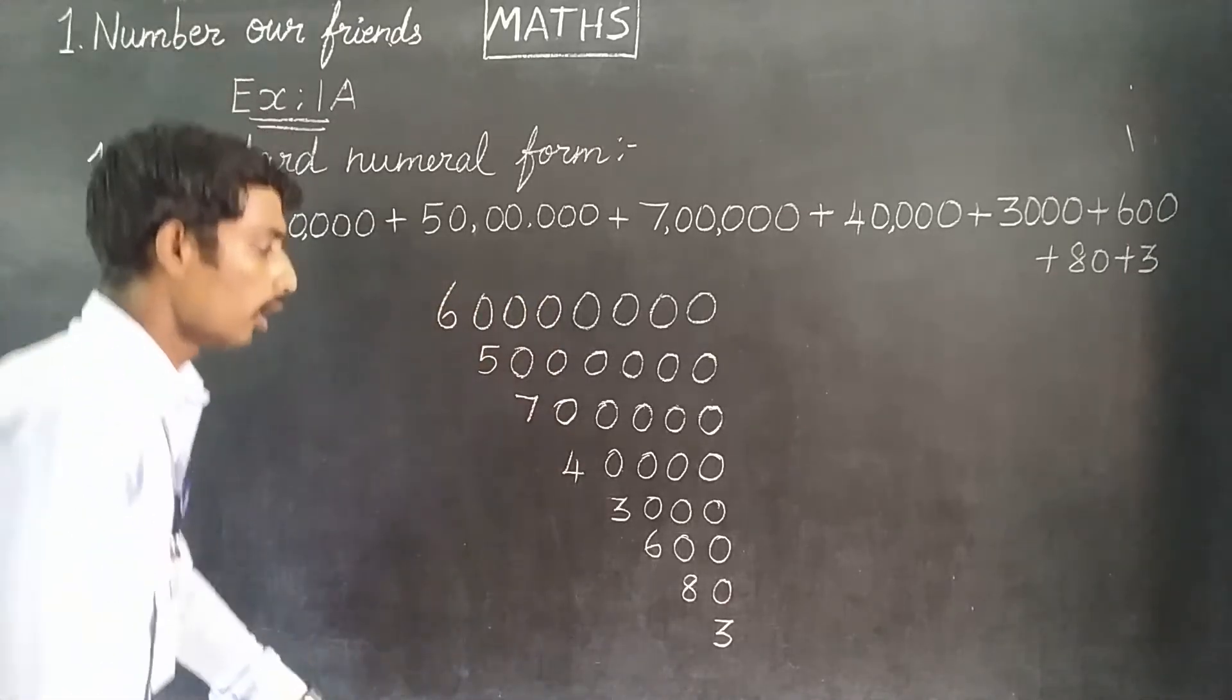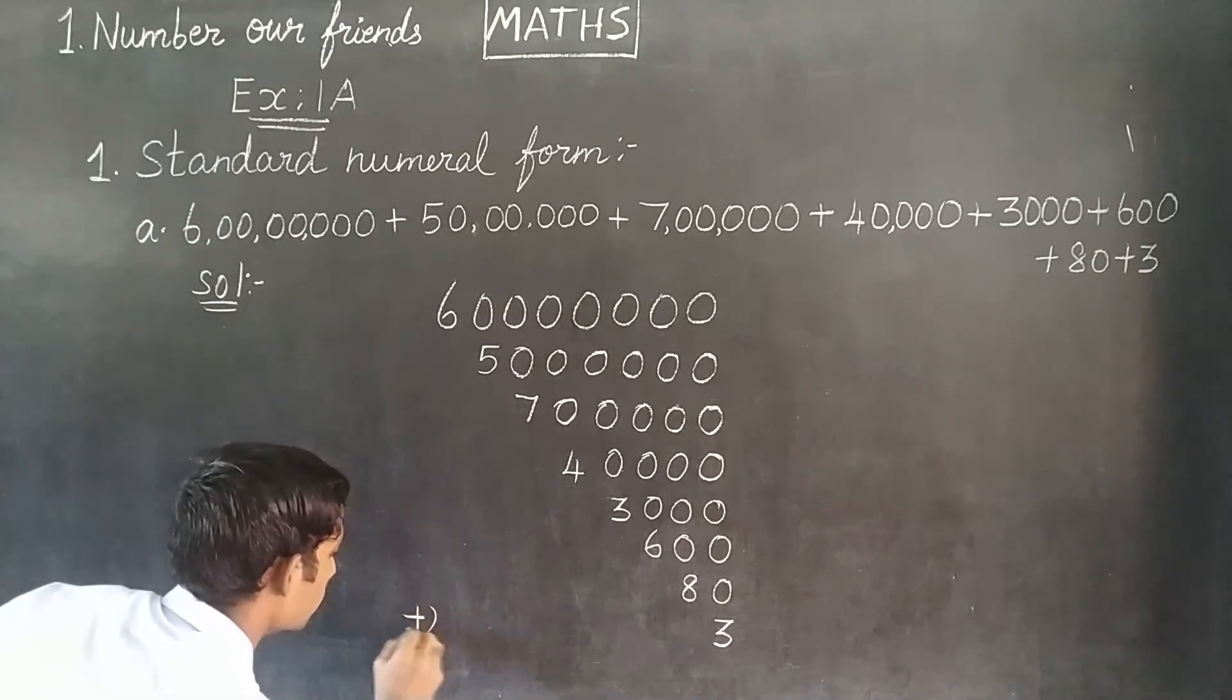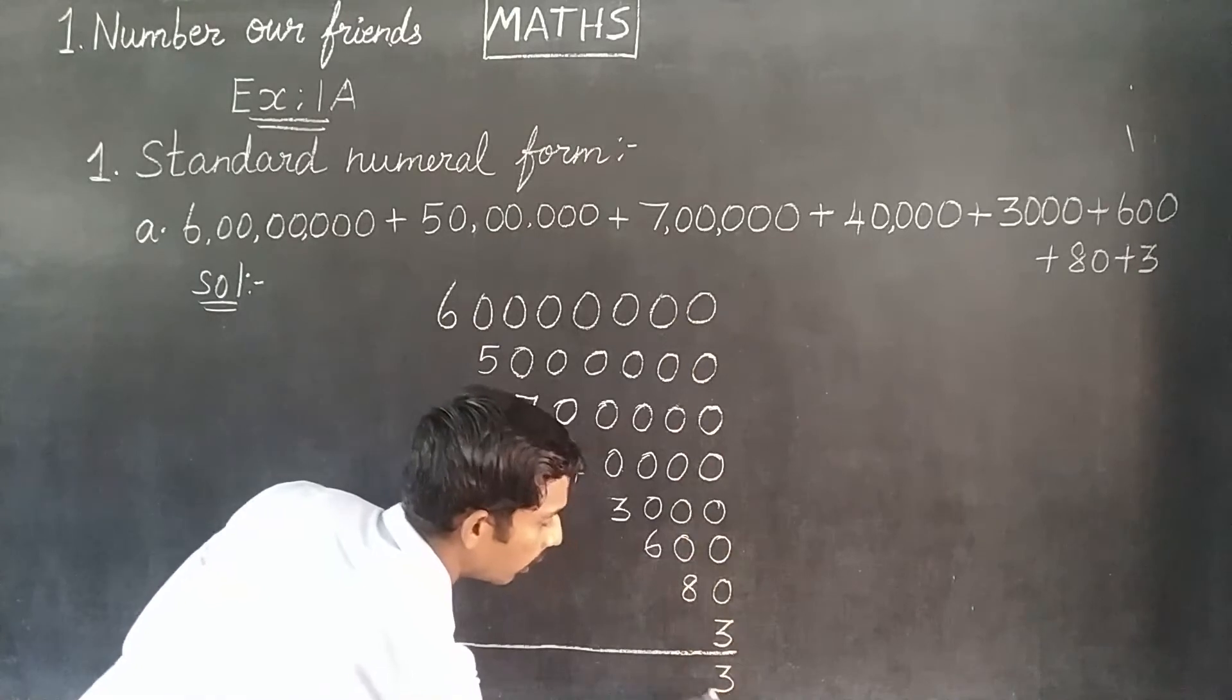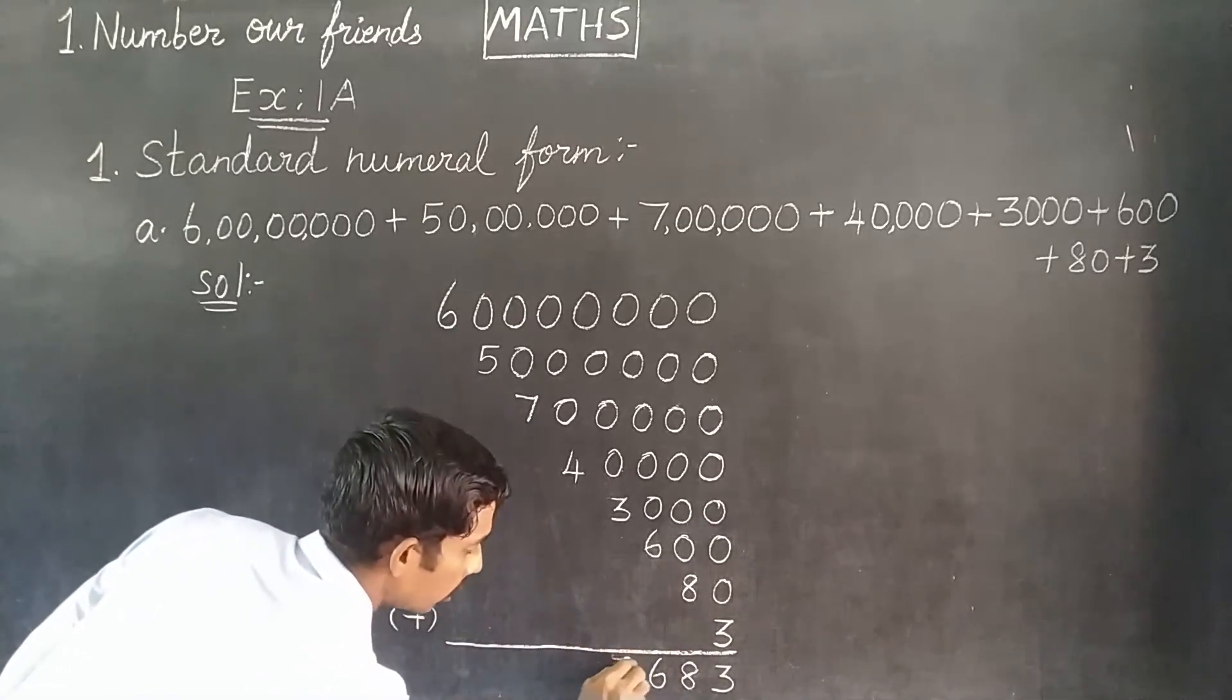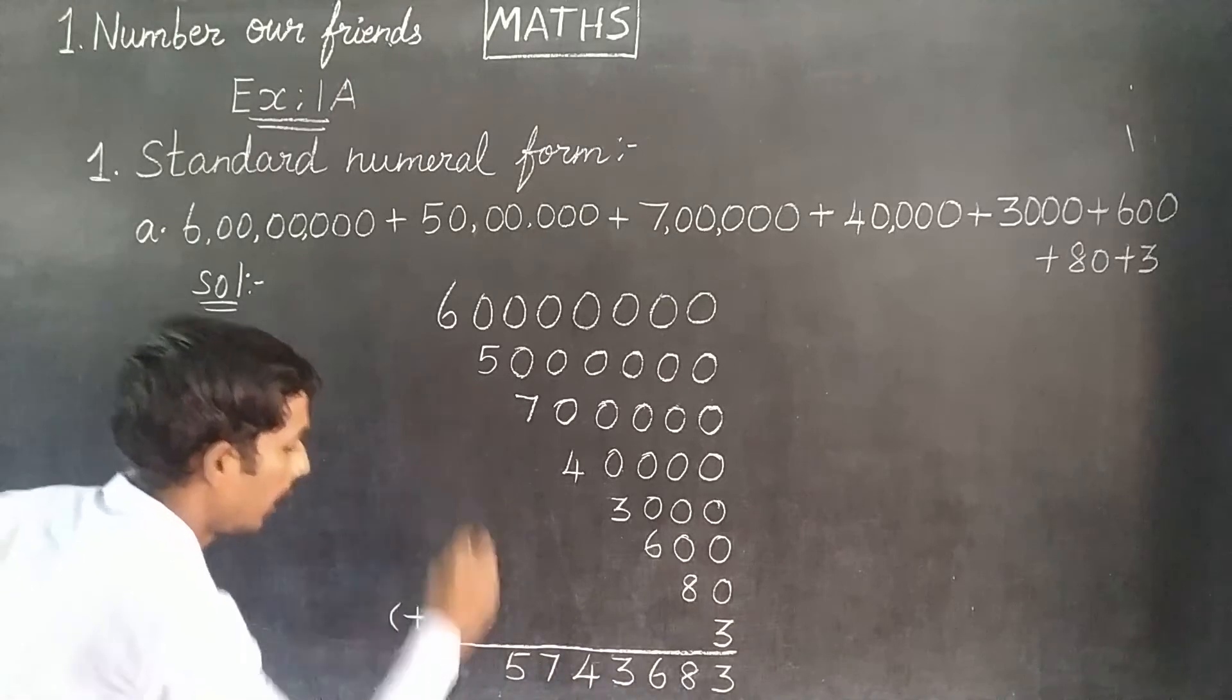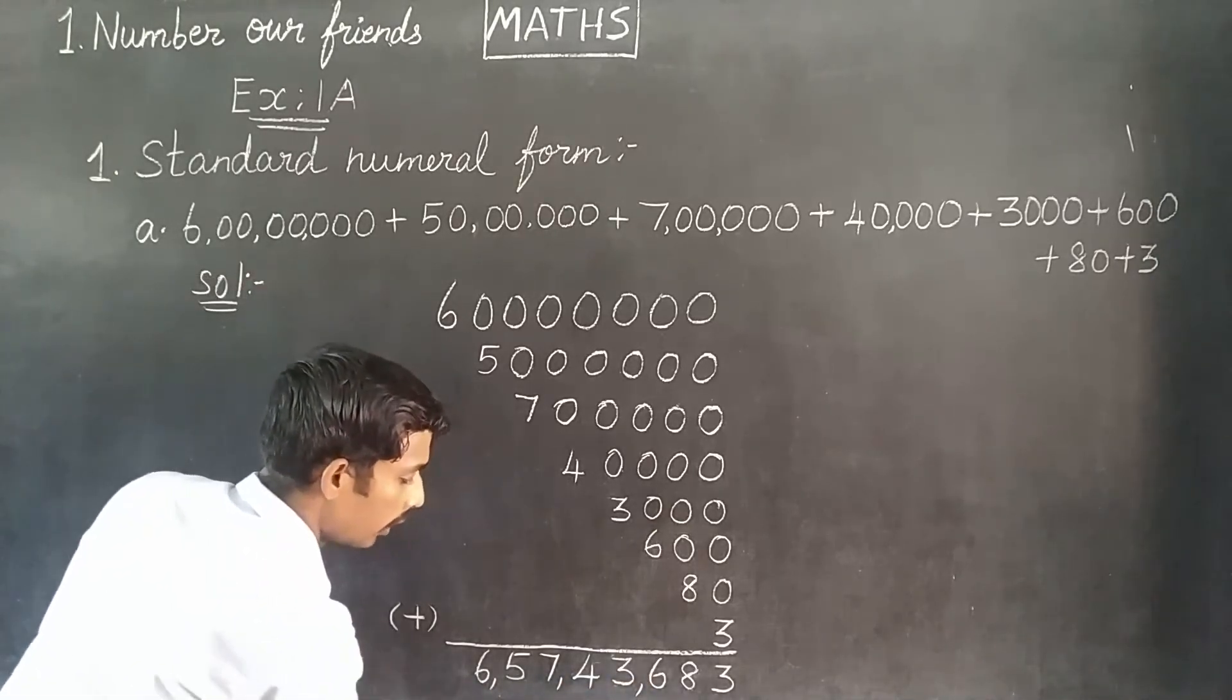We can add numbers together, so plus 4, then 7, then 5, then last was 6. So 6 crore, 57 lakh, 43,683 is the final answer.